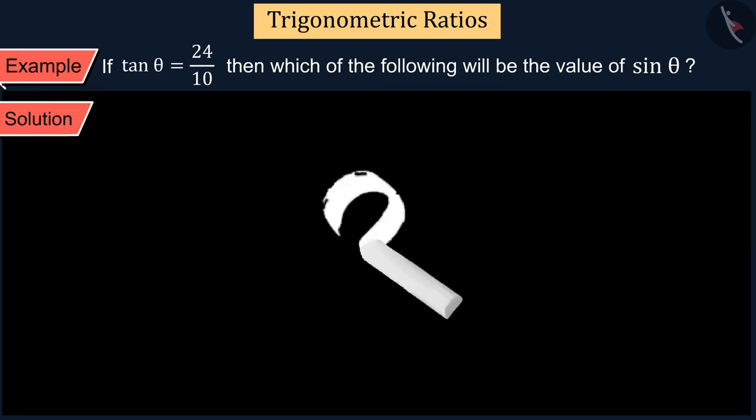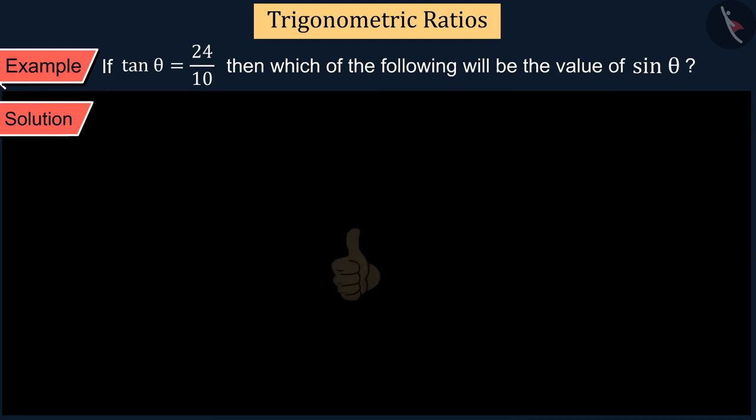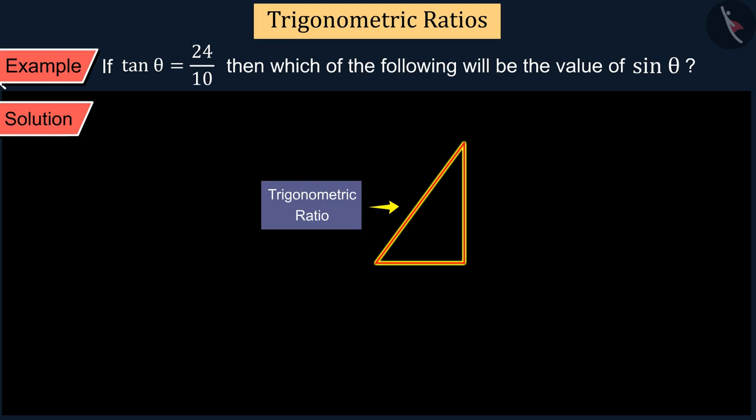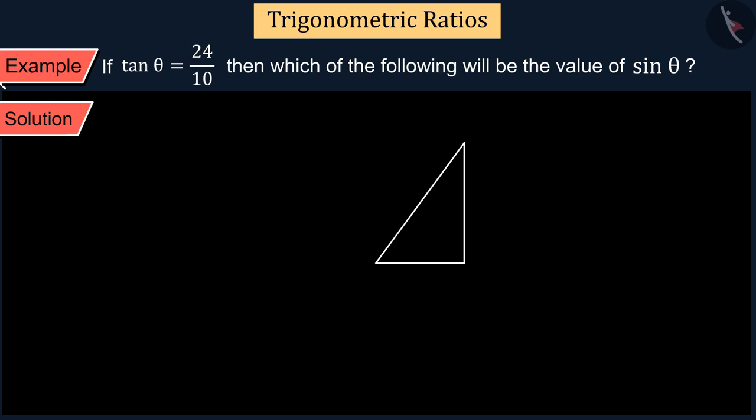Can you tell what we need to do first? Perfect. We know that trigonometric ratios represent the ratios of two sides of a right angle triangle, so first we draw a right angle triangle.